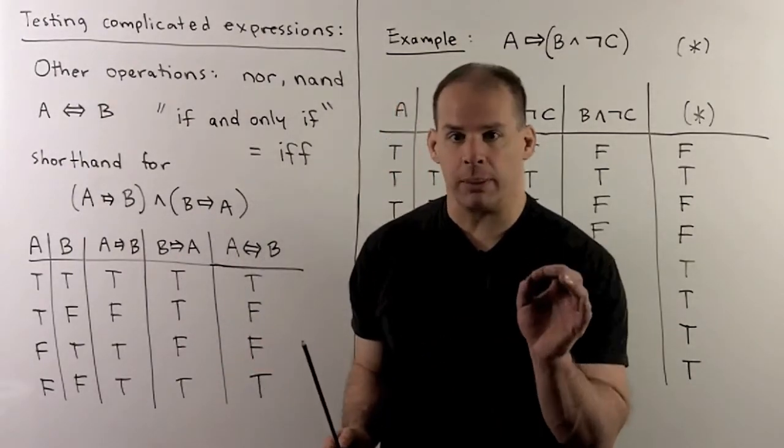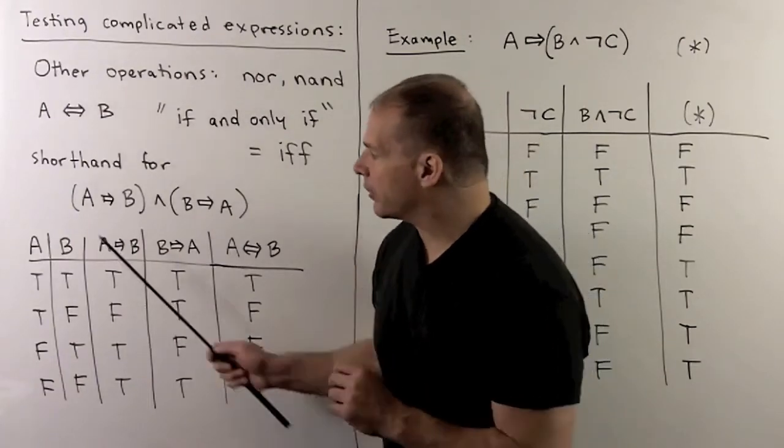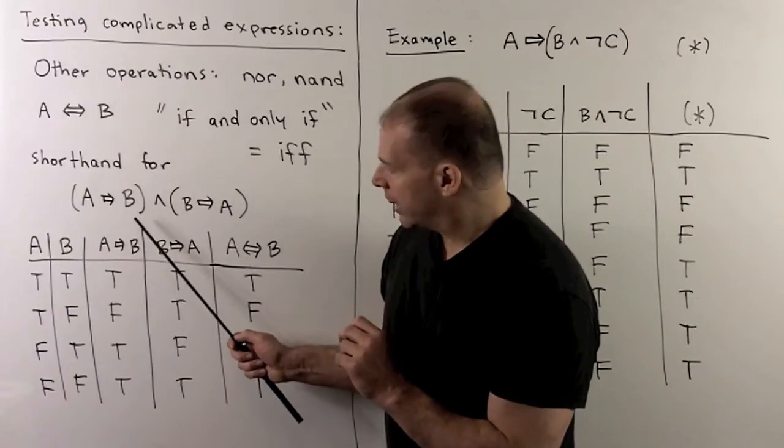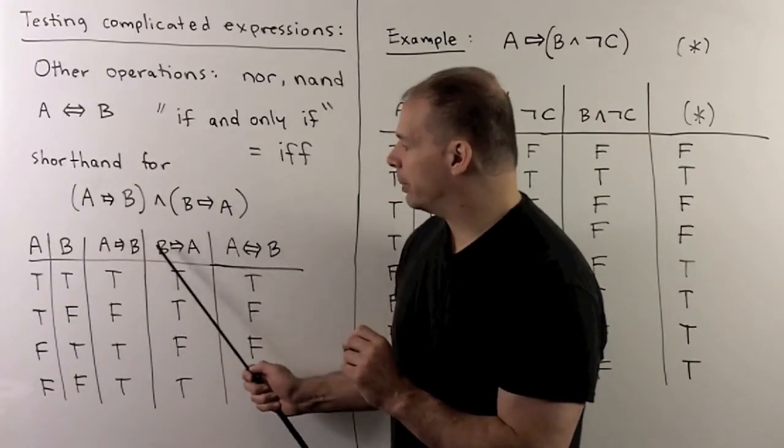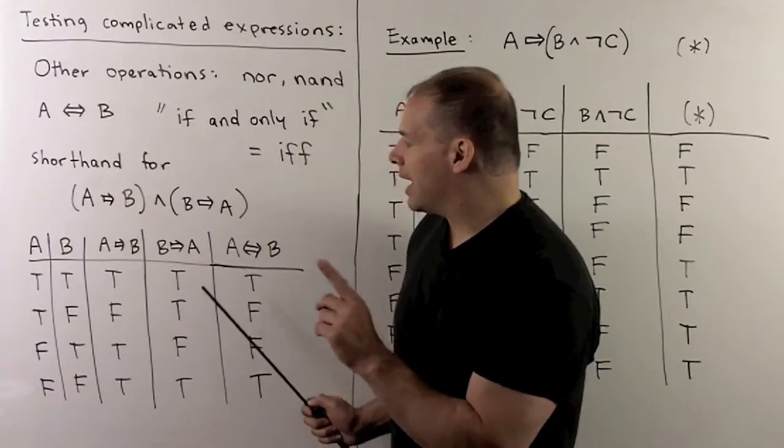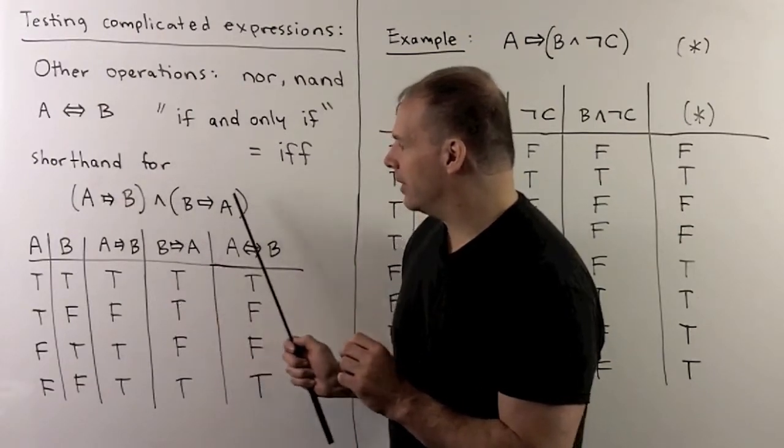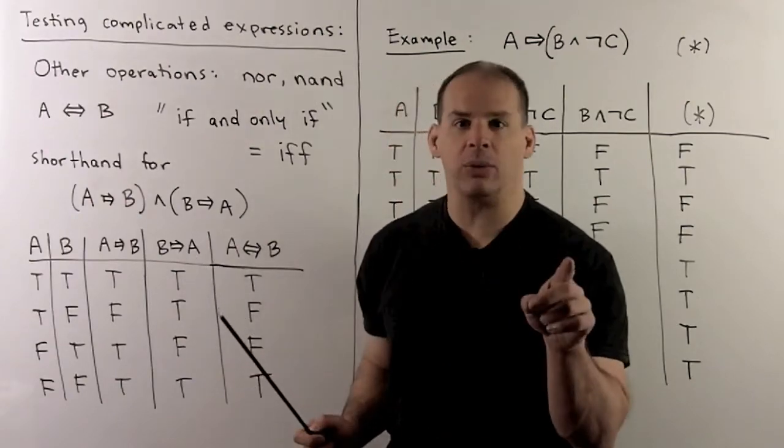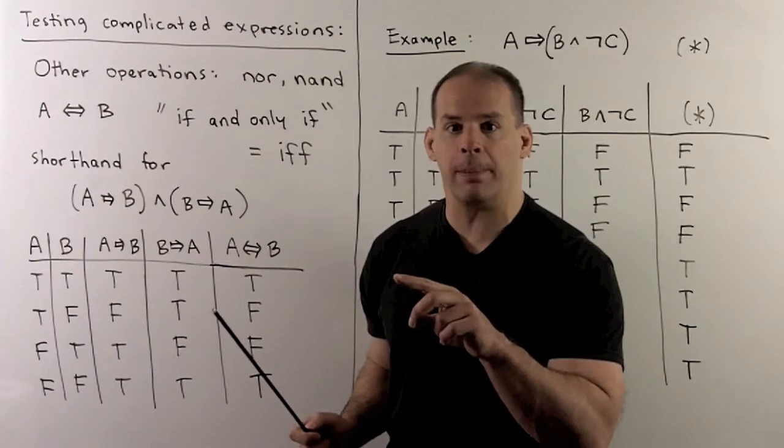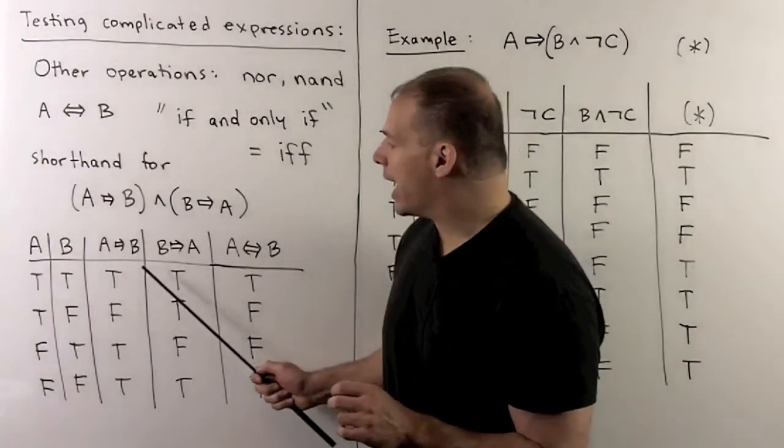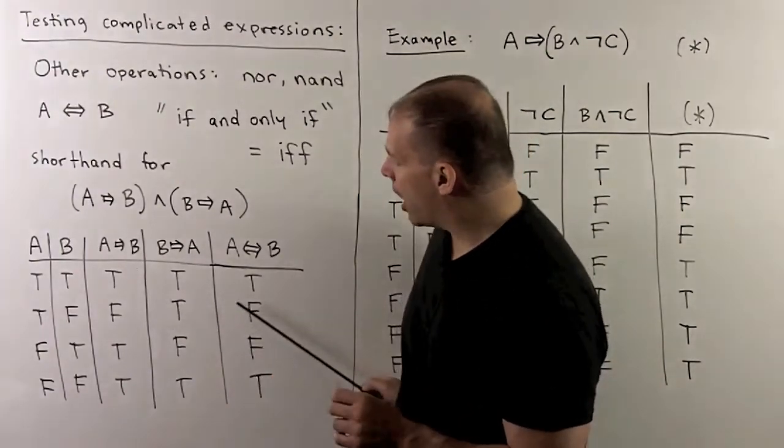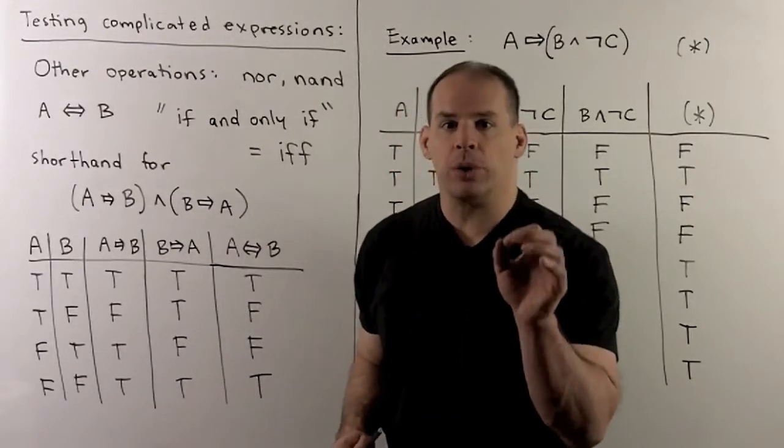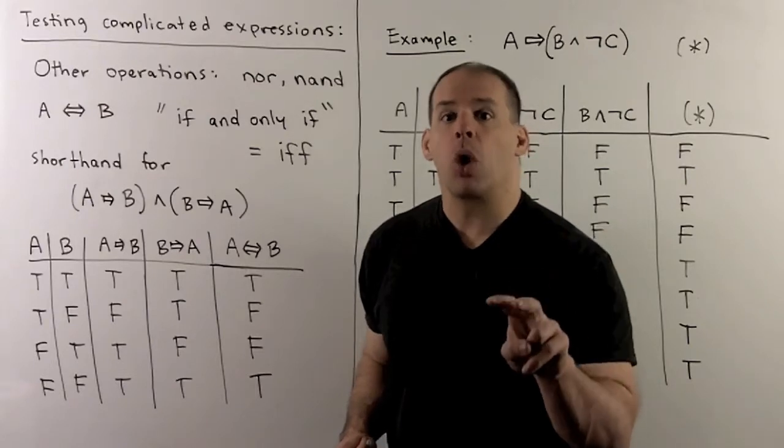So, how do we set up the truth table for this? Well, we set up our columns for A and B as usual. We've just seen how to get the column for A implies B, the column for B implies A. And now, I want to consider this statement and this statement. So, just look and see where they're both true. Remember for and, we have to have both true to get a true statement out. Otherwise, it's false. So, I'll have true, false, false, and true. So, the biconditional will be true when A and B are both true or both false.